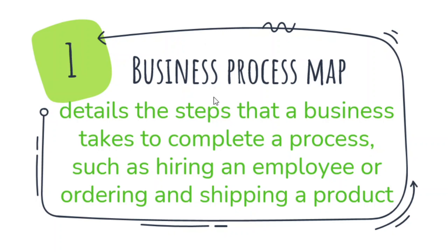Based on the name itself, a business process map details the steps that a business takes to complete a process, such as hiring an employee or ordering and shipping a product. A business process map is a framework used to create a visual representation of work processes. Business process maps show the who, what, when, where, and how for these steps, and help to analyze the why.